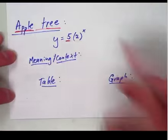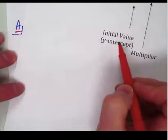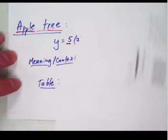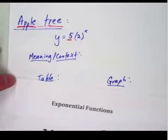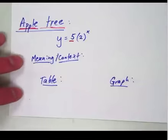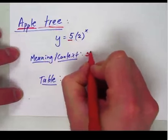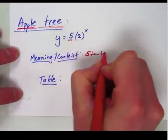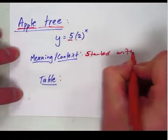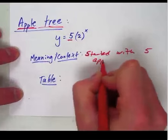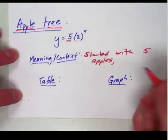well, 5, that has to be some sort of initial value or the y-intercept, and the 2 needs to be some sort of multiplier or what it's changing by. Well, in this context, if we're dealing with an apple tree, that means we started with 5 apples. So I started with 5 apples, and what is it doing? Well, it's doubling.